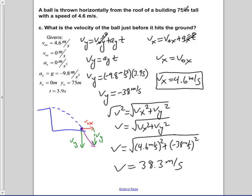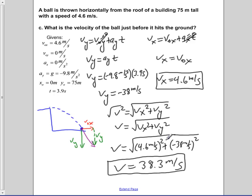We deviated from strict significant figures here because using them would round the answer to 38 meters per second. Mathematically, that's not correct — 38 squared plus something else squared, then square rooted, must be greater than 38. So we show that the speed is in fact increasing, and the magnitude of the final velocity is 38.3 meters per second.